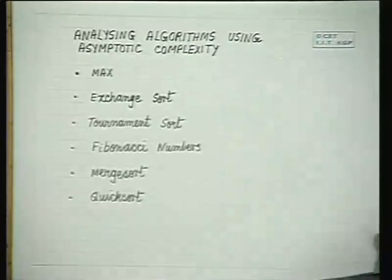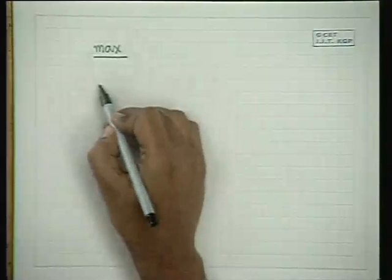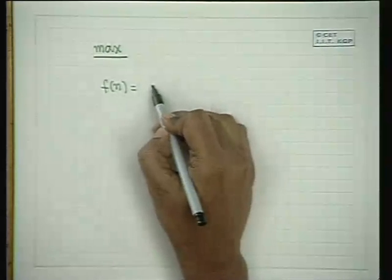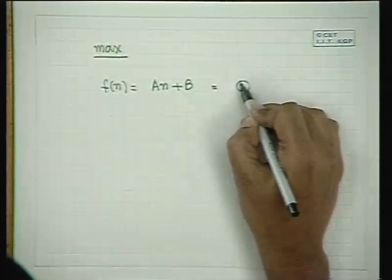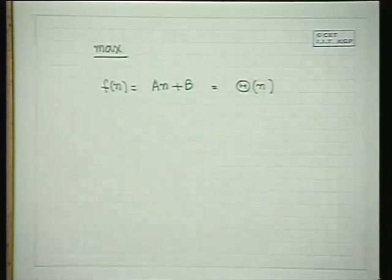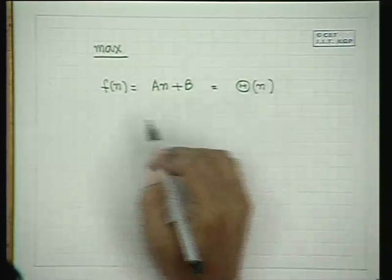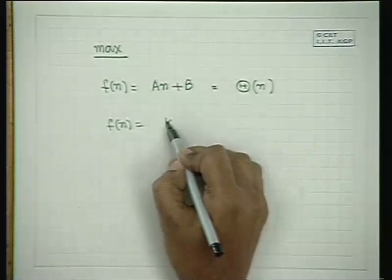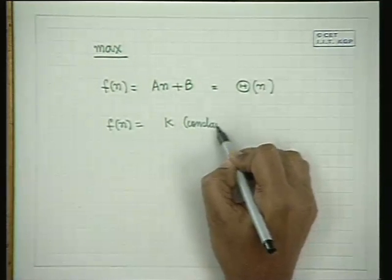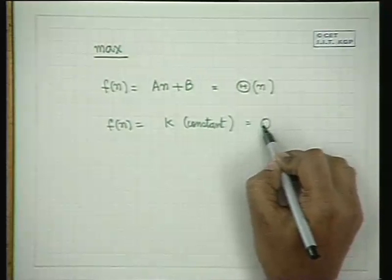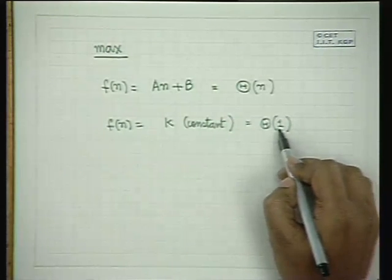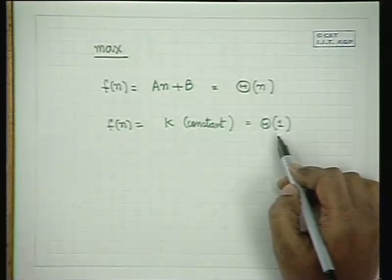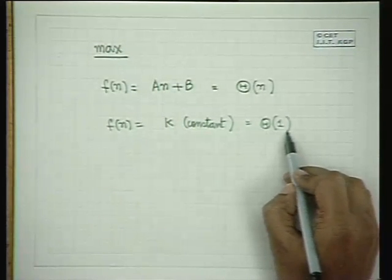The maximum of N numbers was something we did in the previous class. Without writing the routine again, we found that F(n) can be written as An plus B. We can say this is order N. If F(n) is equal to K, a constant, then it is said to be order 1. This constant is usually called order 1 — it is the same as order 3, order 4, order 5; all of them mean the same thing. Constant complexity is order 1.